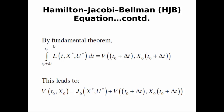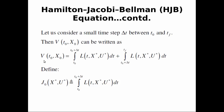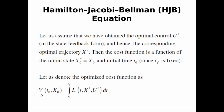By the fundamental theorem of optimality, any slice of an optimal path is also optimal. So the slice from t0+Δt to tf is optimal, and by our definition of V, this cost-to-go equals V evaluated at t0+Δt and x(t0+Δt). This is the optimal cost function property.